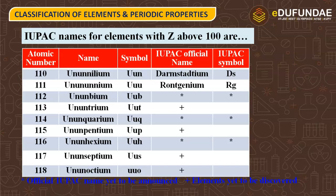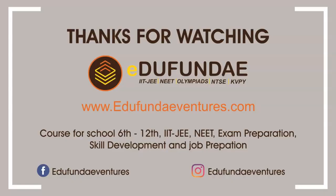So before their discovery, the undiscovered elements are named on the basis of their atomic numbers. That's all for this topic.